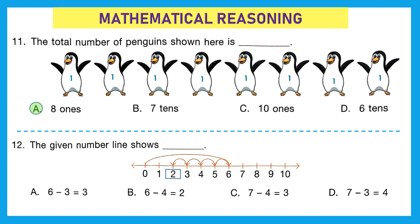Question 12: 'The given number line shows what equation?' The line goes from 0 to 6, then jumps back a few digits to reach 2. So the answer is 2. We need to complete the equation: from 6, going back 4 digits gives us 2. So 6 minus 4 equals 2. The right option is B.